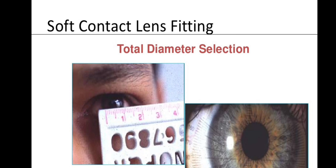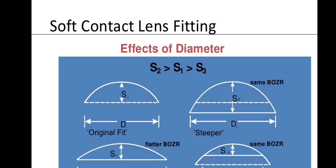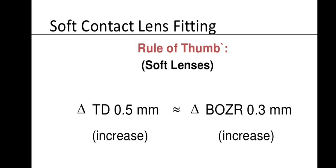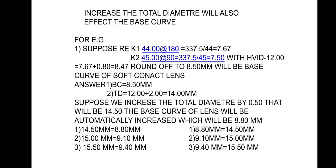Regarding base curve and diameter relationship: if you increase the base curve (flatten the lens), the diameter will also effectively change. The rule of thumb is: if you increase total diameter by 0.5 mm, there is also an increase in back optic zone radius (base curve) of approximately 0.3 mm, so total diameter changes directly affect base curve.